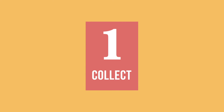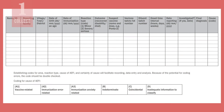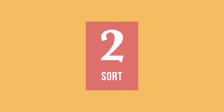First, collect all reported AEFI cases into a line list. An AEFI line list is a list of people who experienced AEFIs during the reporting period. It allows you to consolidate and organize the details on each case for each health facility and for the district as a whole. One row of information is written for each case, covering when, where, and who was affected, along with information about the adverse event and its outcome.